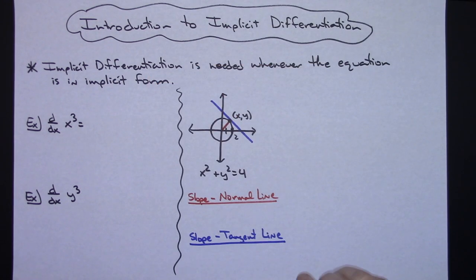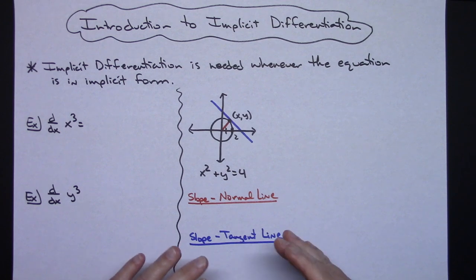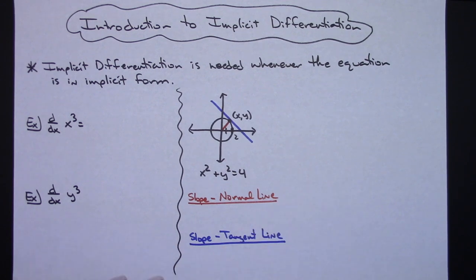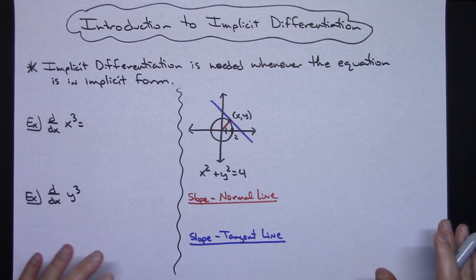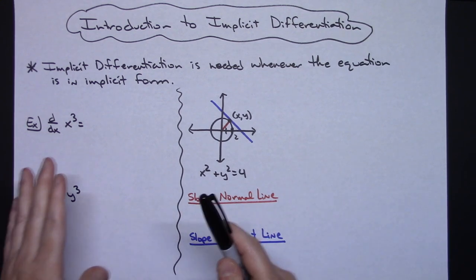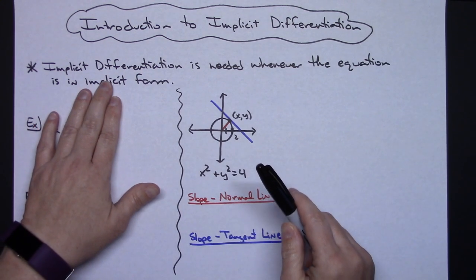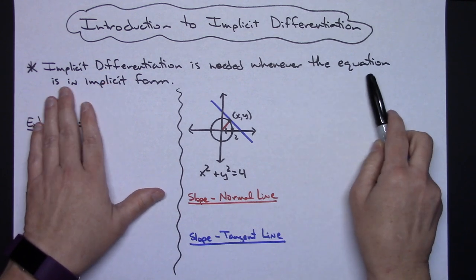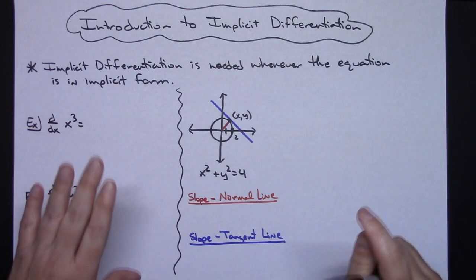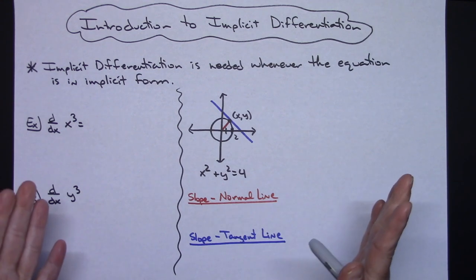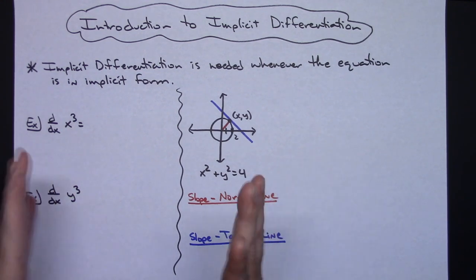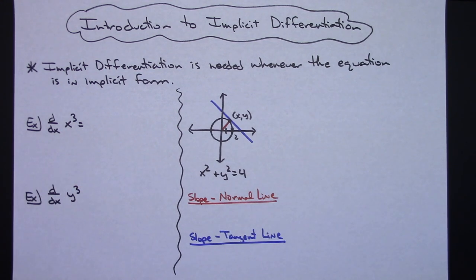In this video I'm going to do a brief introduction to implicit differentiation, just getting you to understand the underlying concepts of when and how this type of differentiation is different than other forms. Implicit differentiation is needed whenever the equation is in implicit form — basically it means your x's and y's are all mixed up in your equation.